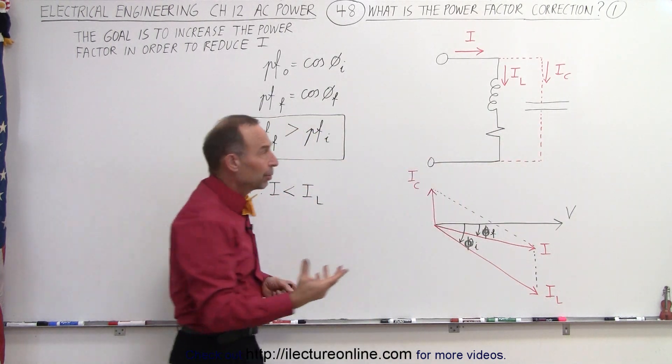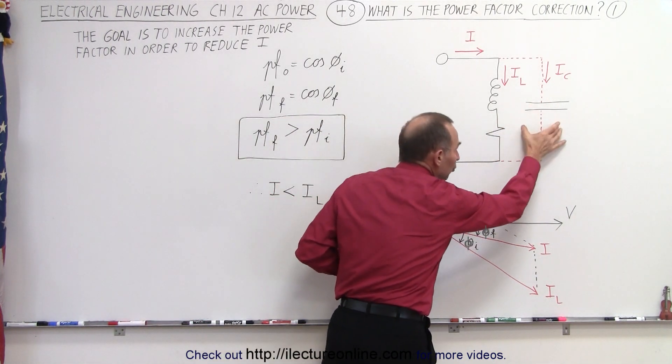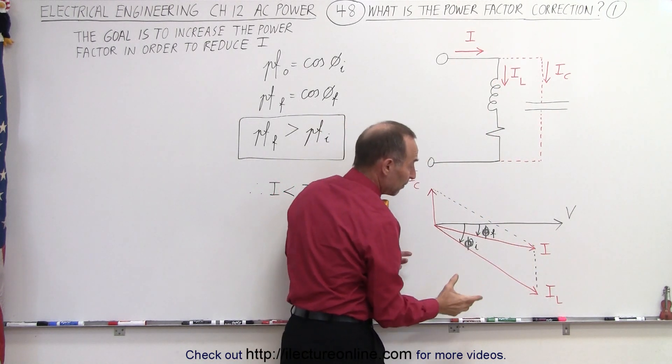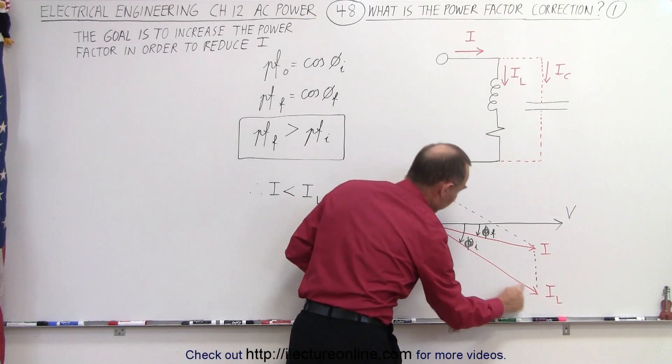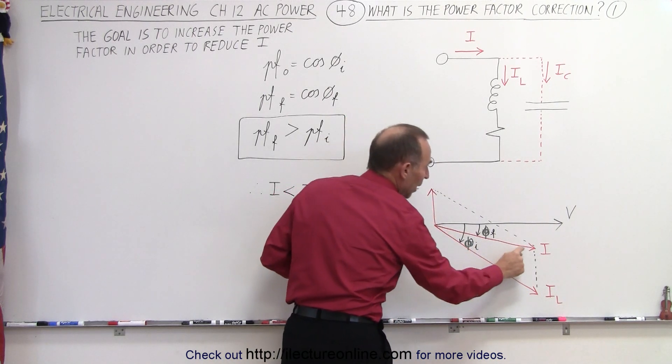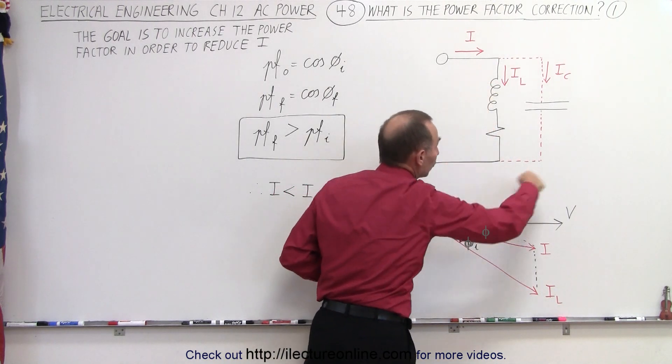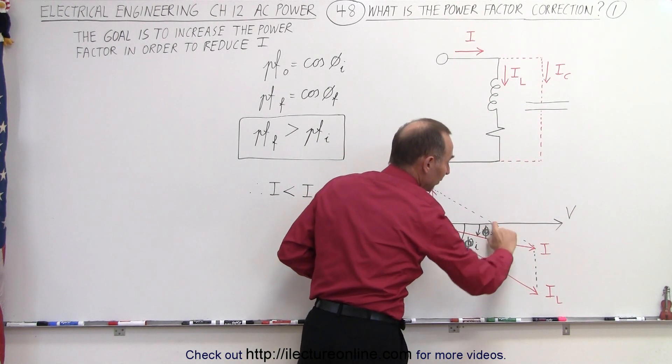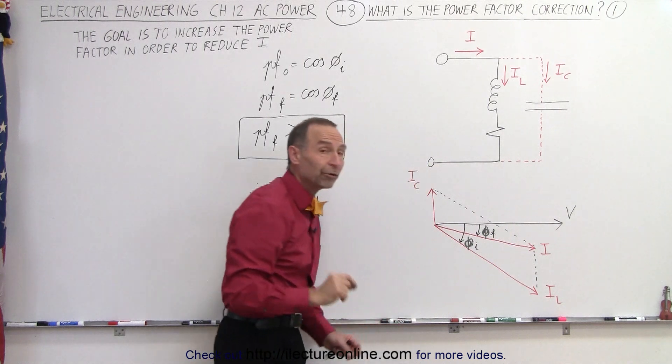Therefore, actually putting a capacitor there reduces the current requirement. You can see how that works here by doing a vector sum. If we add the load current to the capacitor current, we now have the current provided to the whole component. And that current is now going to be less because we now have a smaller phase angle.